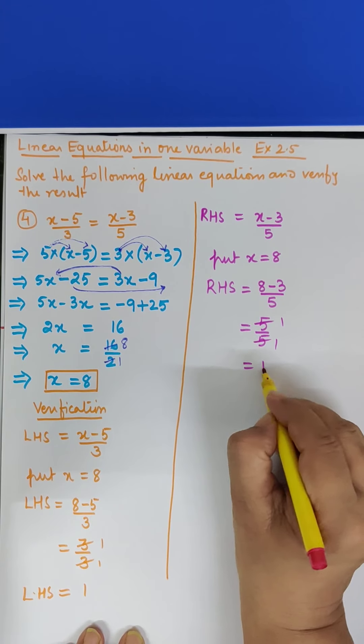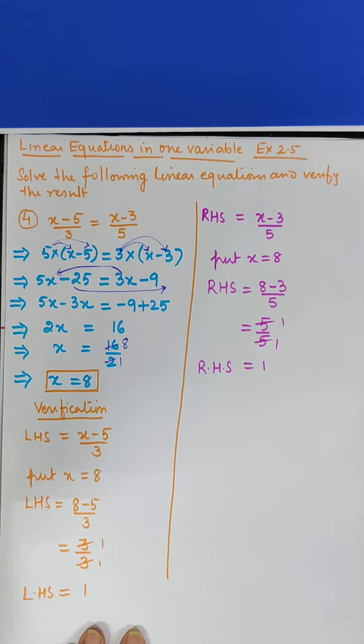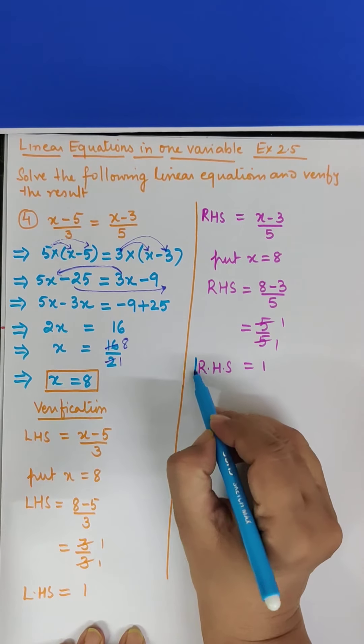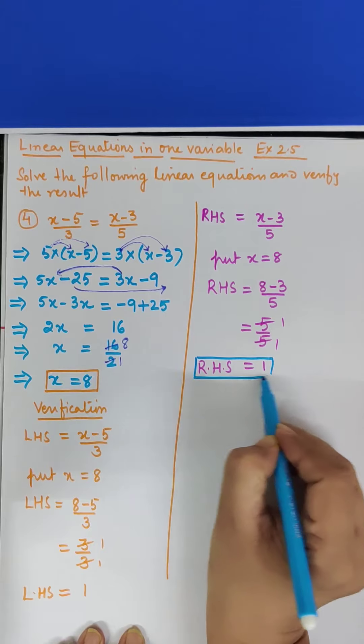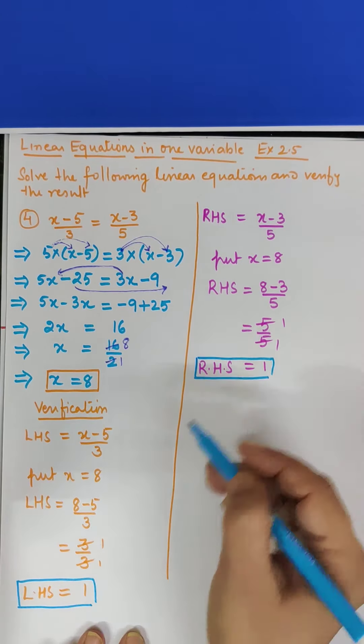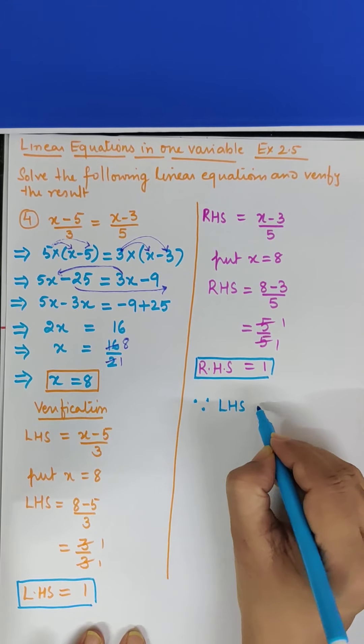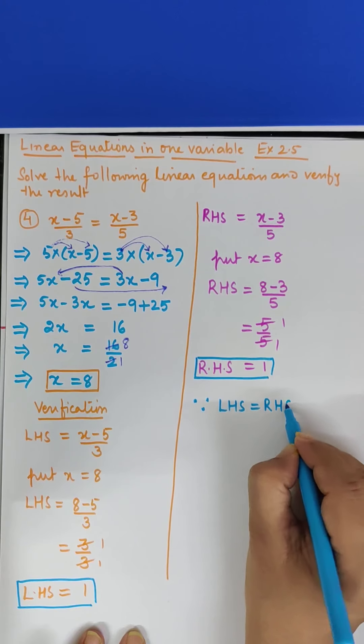8 minus 3 kitna hota hai 5 upon 5 ab ye cancel ho jayega 5 bansa, 5 bansa so 1 upon 1 is 1 iska matlab kya hai. RHS kitna ho gaya. RHS ho gaya, 1. Ye dekha, RHS 1 ho gaya aur yahan humne pehle LHS bhi nikala tha 1. Dono same hai to main likhenge since LHS is equal to RHS.